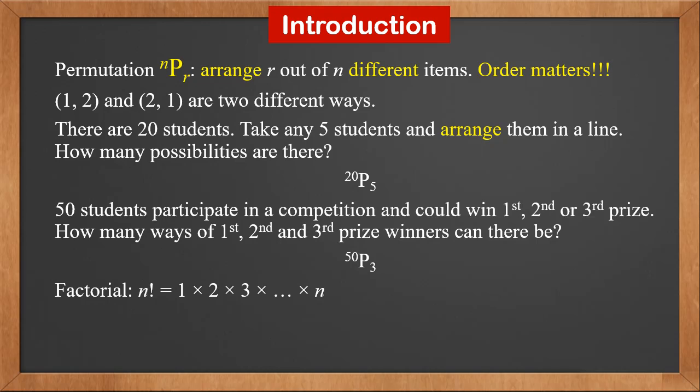We also introduce a new notation here, factorial. This will be used later when we calculate permutation. N factorial is multiply 1 all the way to N. N factorial is N times N minus 1 factorial. 0 factorial is defined as 1.